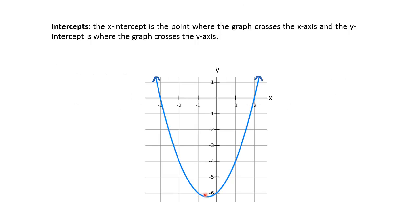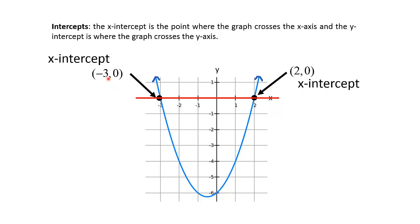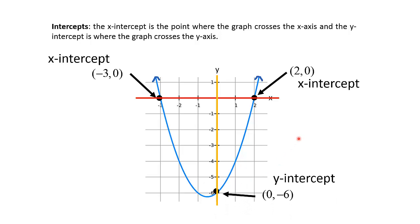The x-intercept is where the graph crosses the x-axis, which is represented by this red line right here. So in this case, we have an x-intercept of negative 3, 0 and also 2, 0. Y-intercepts are really similar — that's when the graph crosses the y-axis, represented by this yellow line right here. So in this case, we have a y-intercept of 0, negative 6.